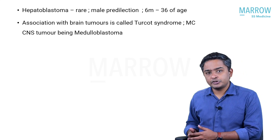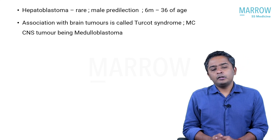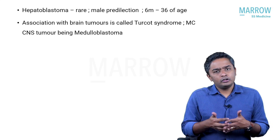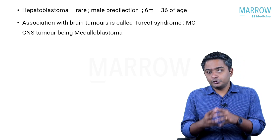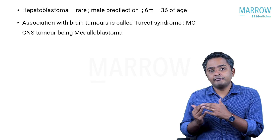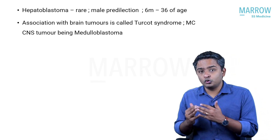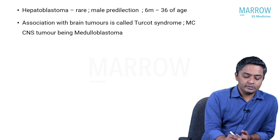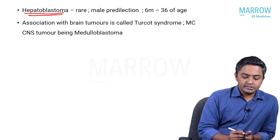There is also hepatoblastoma. The risk is relatively low — very rare — but it has a definite association with FAP syndrome. It can occur as early as infancy, with most cases occurring in the six months to 36 months age group, though it can happen around four to five years as well. Hepatoblastoma, a pediatric liver tumor, can be a rare manifestation of FAP.